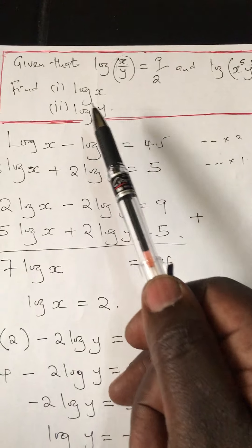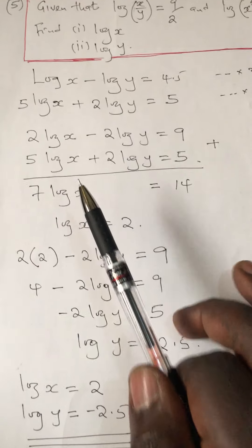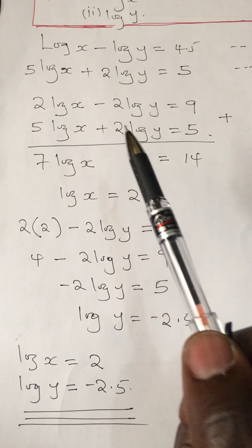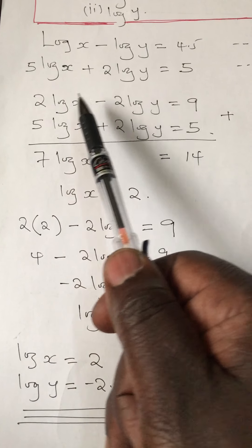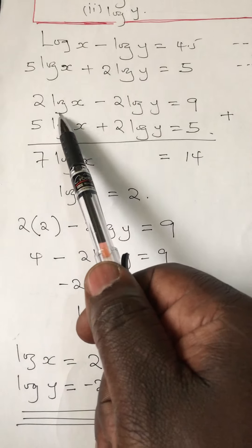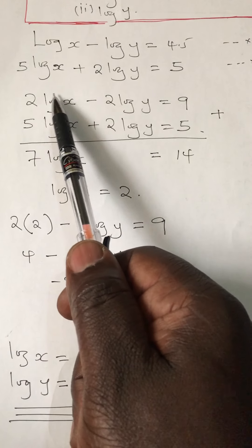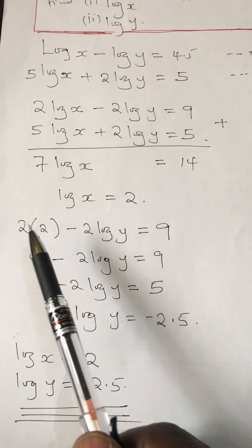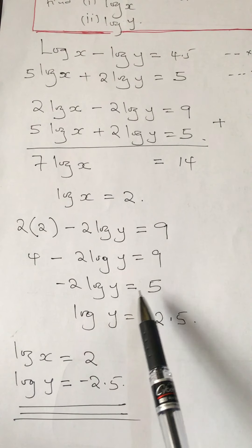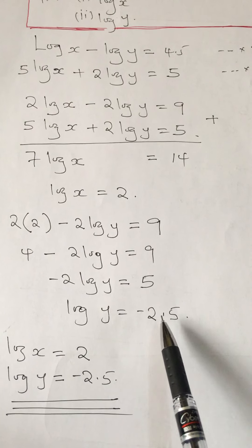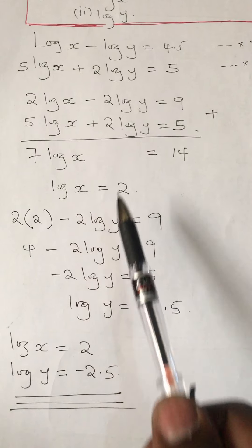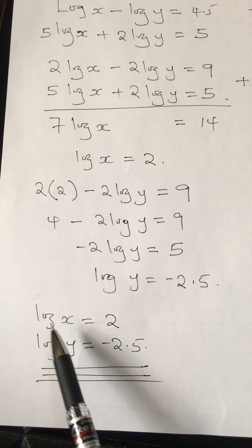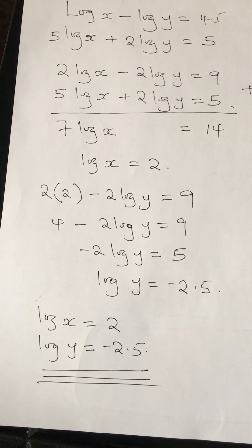They said find log x and log y, so you already got log x. Next, you use this to get the value of log y. In one of these two statements, you substitute. I substituted in this one. Log x is the same as 2, so I have 2 times 2 minus 2 log y equals 9. This leaves you with 4 minus 2 log y equals 9. Simplifying gives the value of log y as negative 2.5. Always when you finish a question, write the two answers clearly: log x equals 2, log y equals negative 2.5.